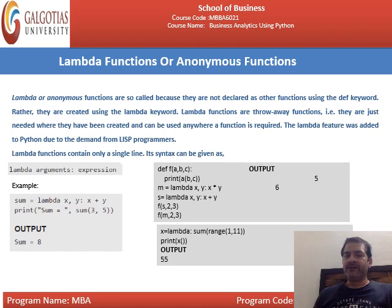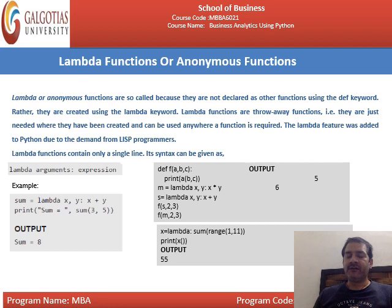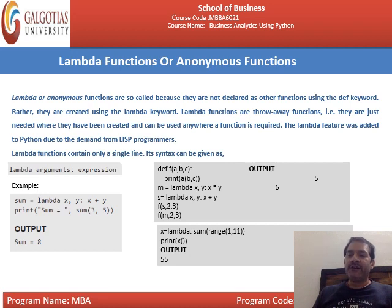First is the anonymous function, also called the lambda function. Lambda or anonymous functions are so called because they are not declared using the DEF keyword. Any regular function uses the DEF keyword to be declared, but if the function is anonymous or lambda, you will not use the DEF keyword. Instead, they are declared using the lambda keyword.